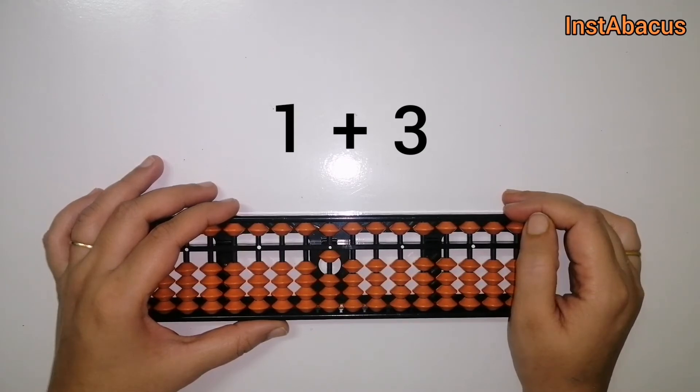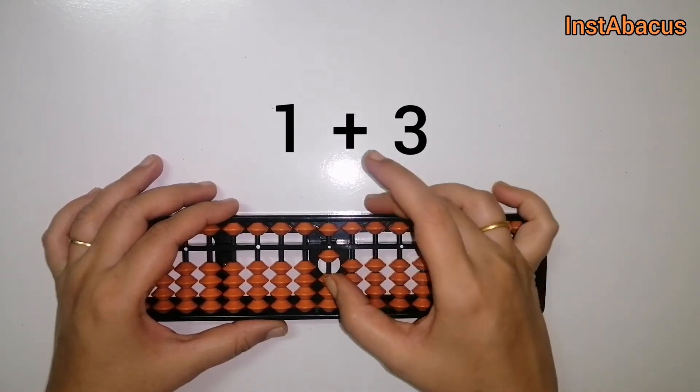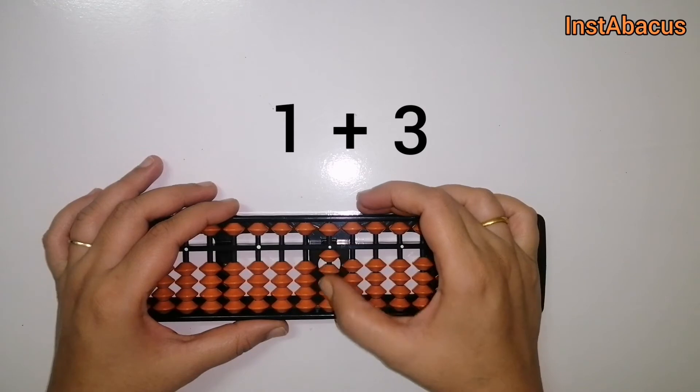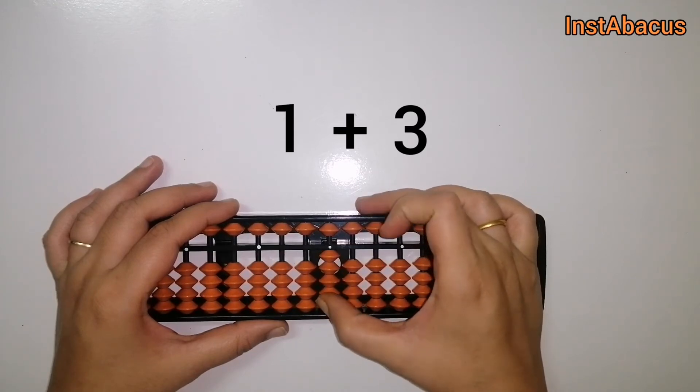One here, easy. Now to that we are going to add three. For that, we will move these three earthly bits towards the answering bar.